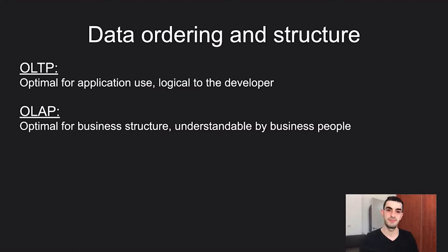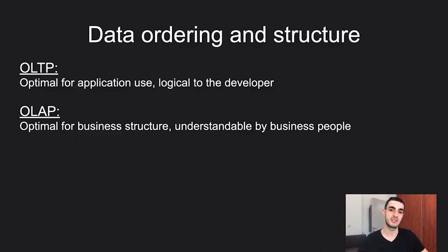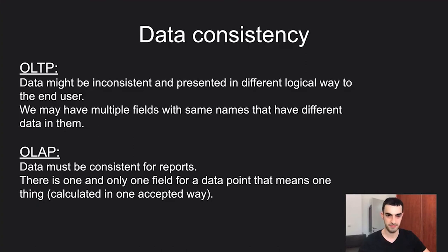Next is data ordering and structure. In OLTP we optimize for application use and make it logical to the developer. In OLAP we optimize for business structure and make it logical to business people. An application might need to access data in a way that is logical to developers for performance reasons but is not how business people think about it. The structure needs to serve the application in OLTP, but in OLAP it must be clear to business users.